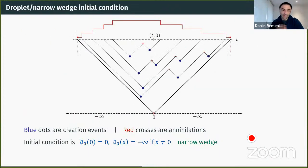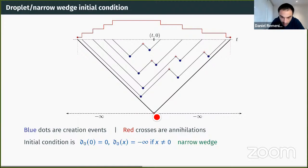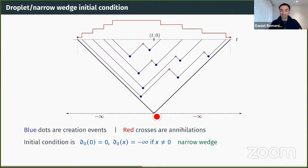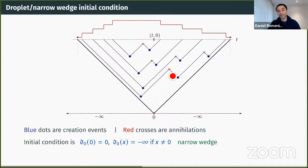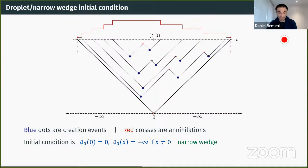Here is a different picture for PNG starting with the droplet or narrow wedge initial condition: growth begins from the origin, while everywhere else is minus infinity. This creates a light cone expanding outwards. The blue dots are nucleation events creating new expanding islands, and the red crosses are merging events. Given the space-time Poisson configuration, I can recover the height function—at any point, the height counts how many of these curves are crossed going downward.